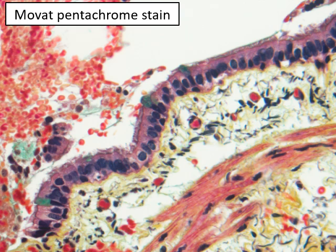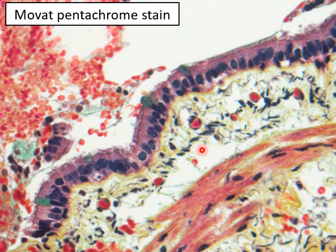A Movat pentachrome stain uses five different colors. One useful feature is that it stains mucin green, making goblet cells stand out clearly. It also shows capillaries in the mucosa, and highlights elastic tissue as black structures — elastic tissue is very difficult to see on H&E but is revealed by Movat pentachrome or Verhoeff–van Gieson stains. The supporting material in the mucosa consists of yellow collagen and black elastin.